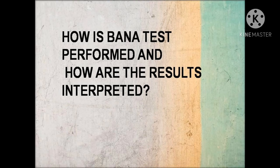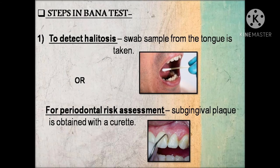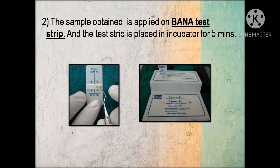Now let's see how the BANA test is performed and how results are interpreted. The first step is to obtain the sample. If the test is done to detect halitosis, a swab sample from the tongue of the patient is taken. For periodontal risk assessment, a sample of subgingival plaque is obtained with a curette. The obtained sample is then applied on the BANA test strip, which contains the BANA substrate.